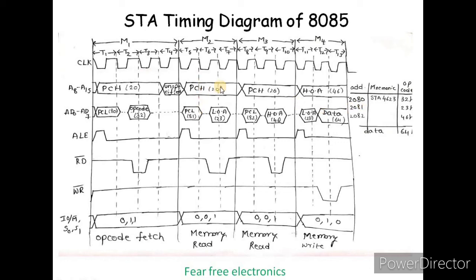Similarly, the lower-order address PCL is 81H at 2081. When ALE goes low, data — the lower-order byte of the operand address, 23H — is read on D0 to D7.